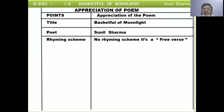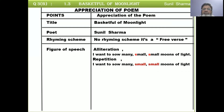The fourth point is the figure of speech. We will see alliteration. Alliteration means that in one line, multiple words start with the same alphabet. For example, in the line 'I want to sow many small small moons of light,' the letter S appears three times — in 'sow,' 'small,' and 'small.' So there is an alliteration figure of speech here.